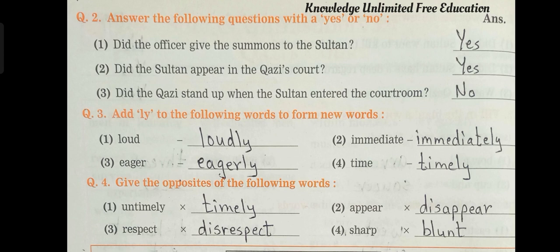Question number 2: Answer the following questions with yes or no. Number 1 — Did the officer give the summons to the Sultan? Yes. Number 2 — Did the Sultan appear in the Qazi's court? Yes. Number 3 — Did the Qazi stand up when the Sultan entered the courtroom? No.